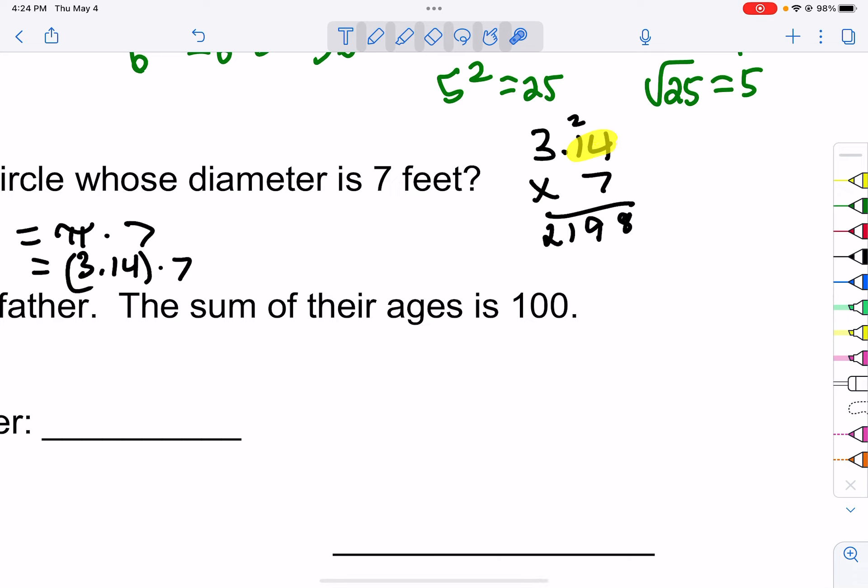Now let me remind you about decimals. However many digits are behind the decimal place, we're going to take the decimal point and we're going to move that same number of digits. In this particular one, we need to move the decimal place over two. So our final answer is a circumference, that's the distance around our circle, of 21.98 feet.